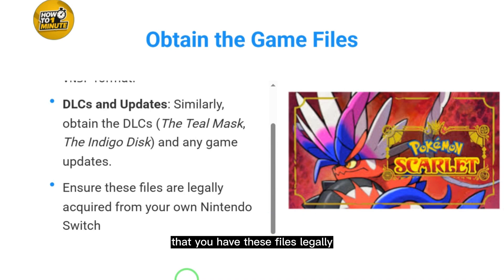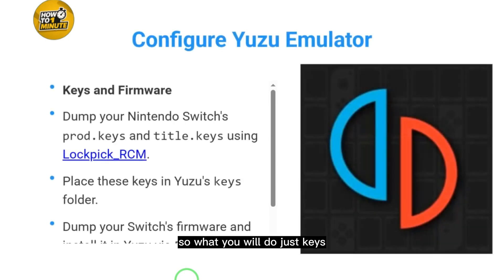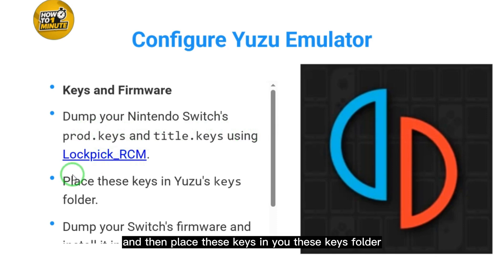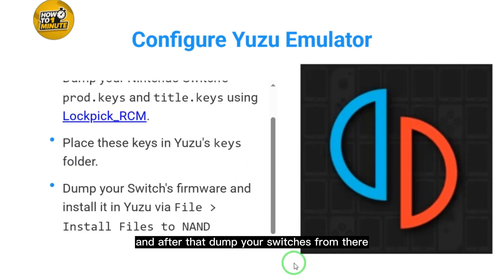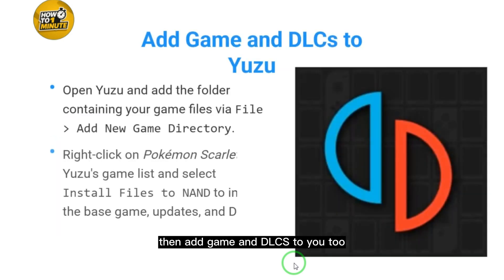Next, configure the Yuzu emulator. For keys and firmware, dump your Nintendo Switch prod.keys and title keys using Lockpick RCM, then place these keys in the Yuzu keys folder. After that, dump your Switch firmware and install it in Yuzu via File > Install Files to NAND.